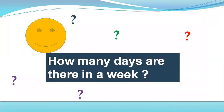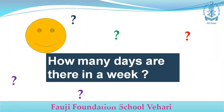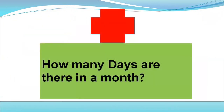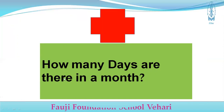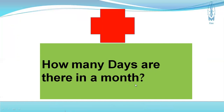These are the days of the week. How many days are there in a week? There are seven days in a week. Do you know how many days are there in a month? In a month, there are almost 30 to 31 days.